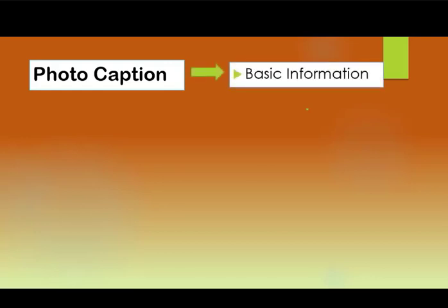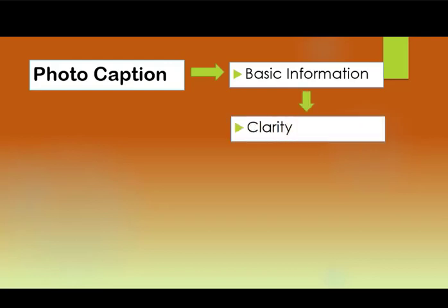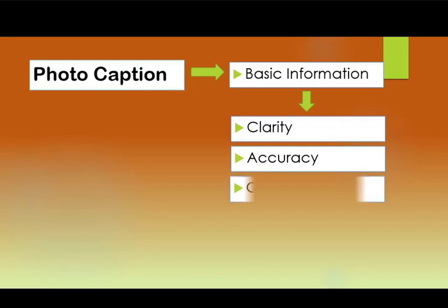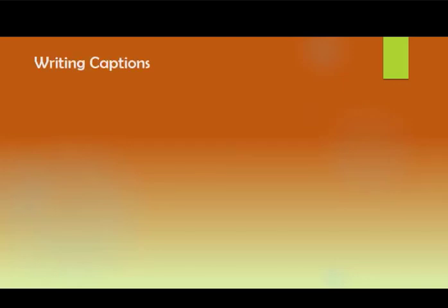We need to know the rules in writing a photo caption. When we write a photo caption, it must provide basic information. The basic information must follow three principles: first, clarity; then accuracy; and next, completeness of the information provided. These are the things we must pay attention to when writing a caption.